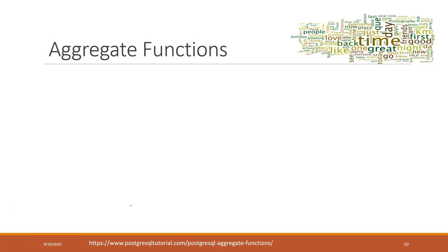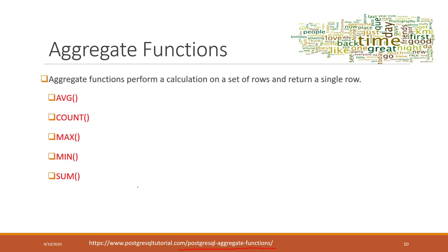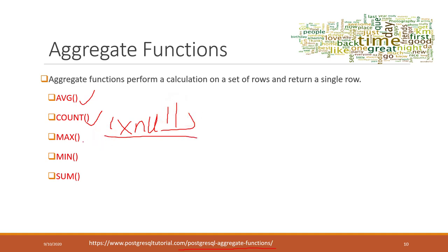Let's talk about another very important set of functions in SQL called aggregation functions. Aggregation functions perform a calculation on a set of rows and return a single row. Some of the very commonly used aggregation functions include average, count — which does not include null values — maximum, minimum, and sum, among others.